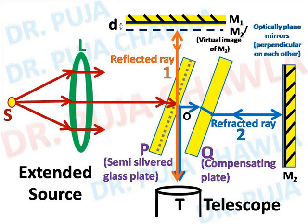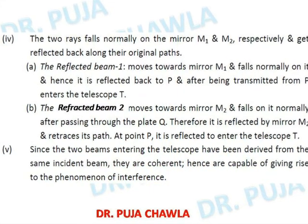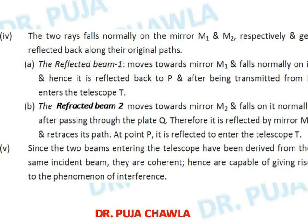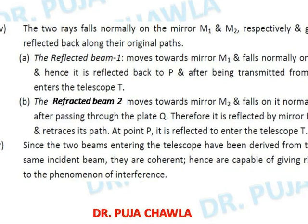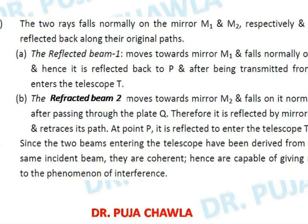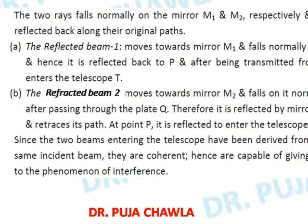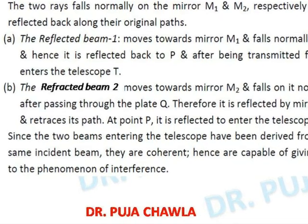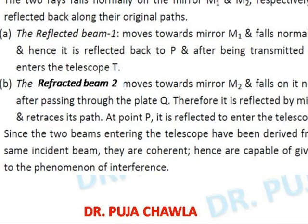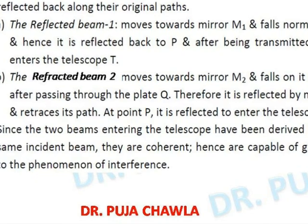The complete setup is the Michelson interferometer. The beams reflected by M1 and M2 are incident on glass plate P and then enter into telescope T. In the telescope, two beams enter: reflected beam 1 and reflected beam 2. Because these two beams are derived from a single source, they are coherent, and when they enter the telescope they produce an interference pattern.